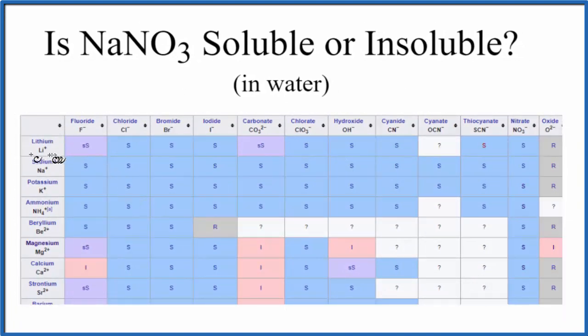And we find sodium right here. These are the positive ions. The negative ions, here's the nitrate, way over here. So if we go across and then down, that S, that means that it's a soluble compound.